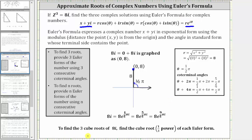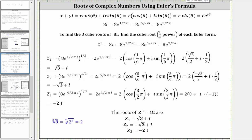To find the three cube roots, or three complex solutions, we find the cube root — the 1/3 power — of each Euler form. We let the three complex solutions be z₁, z₂, and z₃. For each root, we take the exponential form of 8i and raise it to the 1/3 power, which is the same as the cube root.